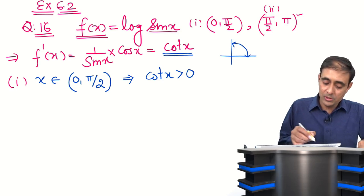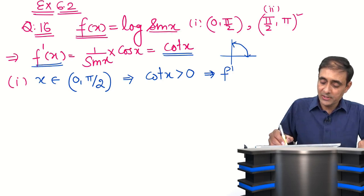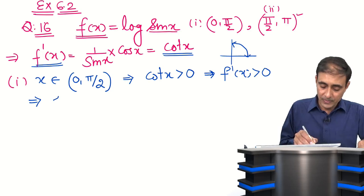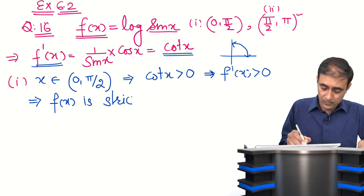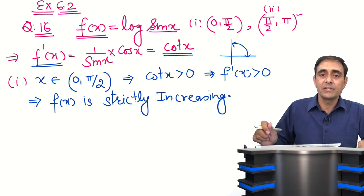Since cot x = f'(x), this implies f'(x) is greater than 0. And if f'(x) is greater than 0, this implies f(x) is strictly increasing. So f(x) is a strictly increasing function on (0, π/2).